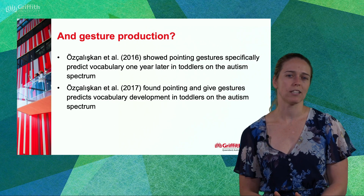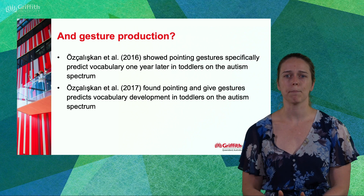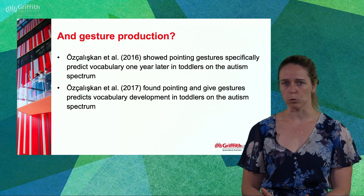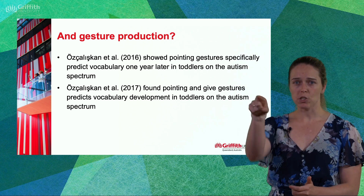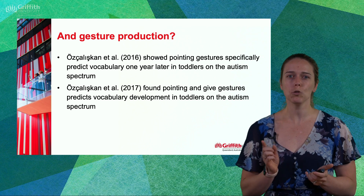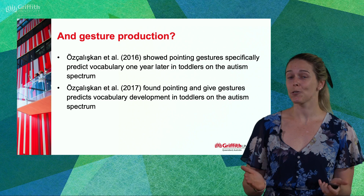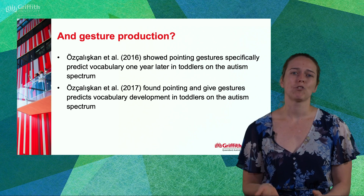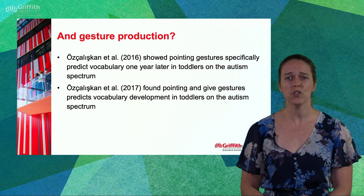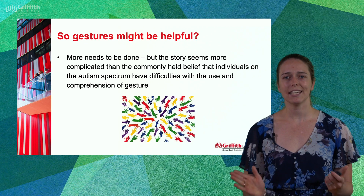What about production of gesture by individuals on the spectrum — could that benefit learning too? What we know so far is that pointing gestures, as well as giving gestures, predict vocabulary development in toddlers on the autism spectrum. For example, objects that toddlers pointed to were more likely to show up in their speech over the next year. So that toddler saying 'ooh' while pointing to a cookie might be saying 'cookie' in the not too distant future. But while we know that using fingers to count can assist counting performance in neurotypical children, we just don't know yet if those same counting gestures help individuals on the autism spectrum count in a similar way.